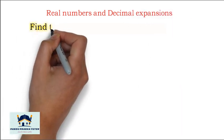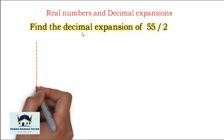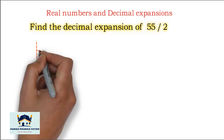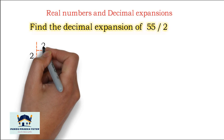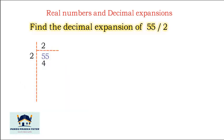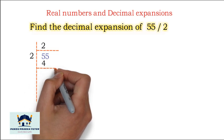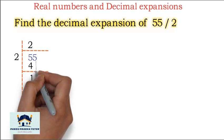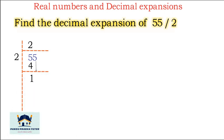Find the decimal expansion of 55 divided by 2. We divide: 2 goes into 5, 2 times 2 is 4. Subtract: 5 minus 4 is 1. Bring down the 5, now we have 15.